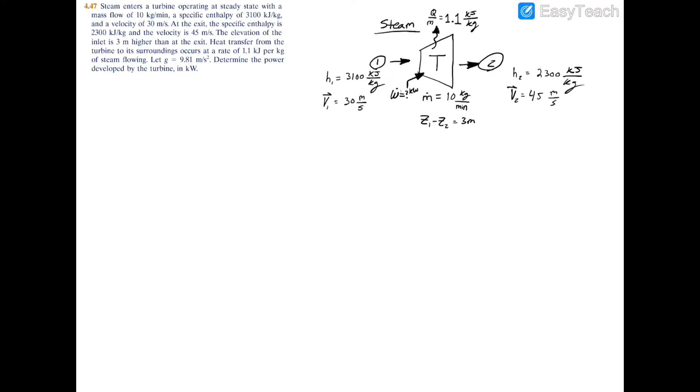Here we have our schematic: turbine inlet, turbine exit, and we have everything—the specific enthalpies on either side, the velocity on either side, the mass flow rate, change in elevation, and the heat transfer. When I draw out a schematic like this, I see that I have absolutely everything I need for a single inlet single exit control volume energy balance equation.